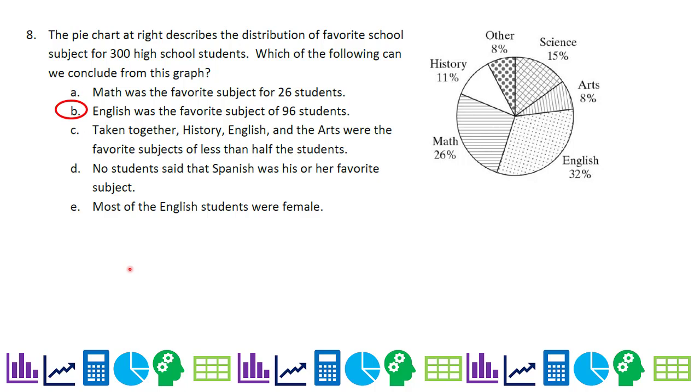English was a favorite subject of 96 students. Math is 26%, we have 300 students. 26% of 300 is 0.26 times 300 or 78. So that's not true. They think it's 26 students, but there are 300 total students.